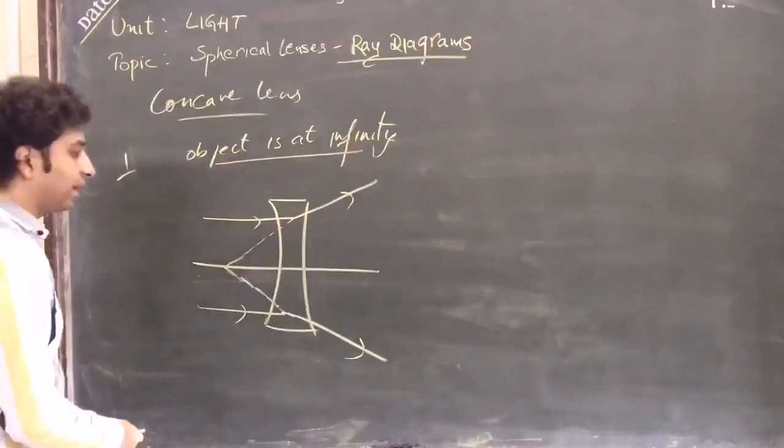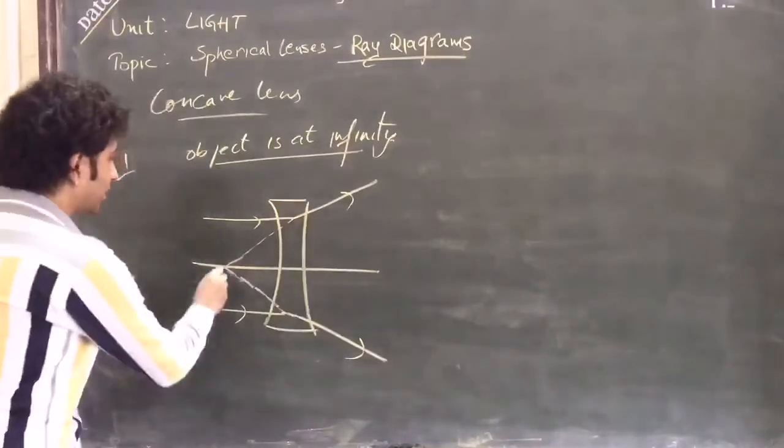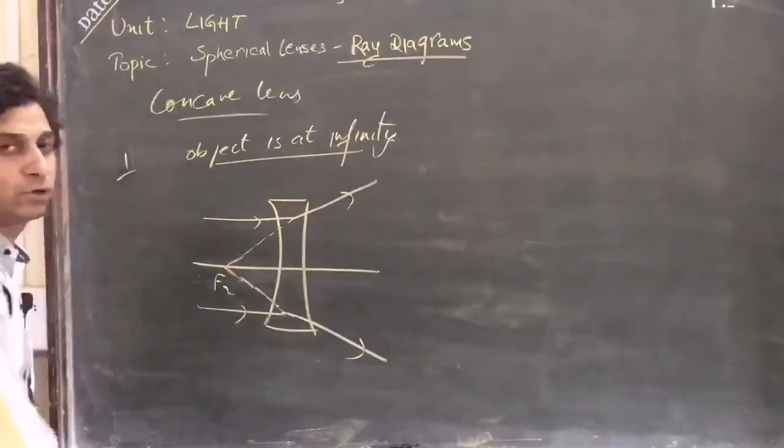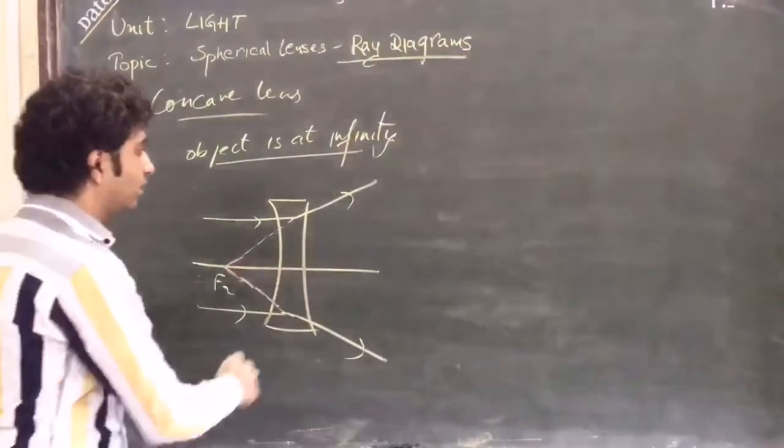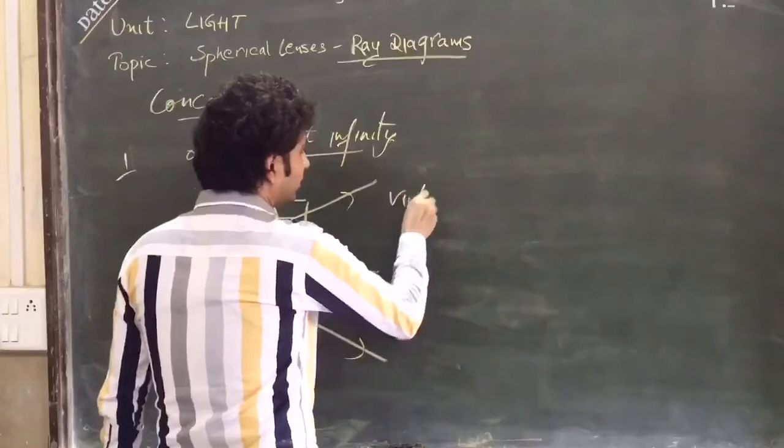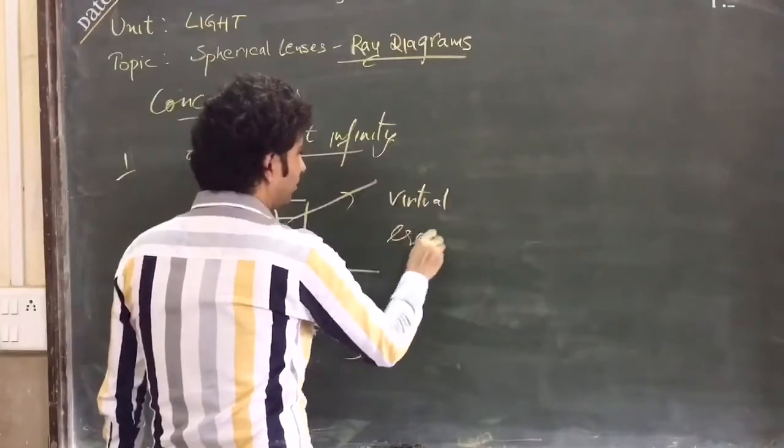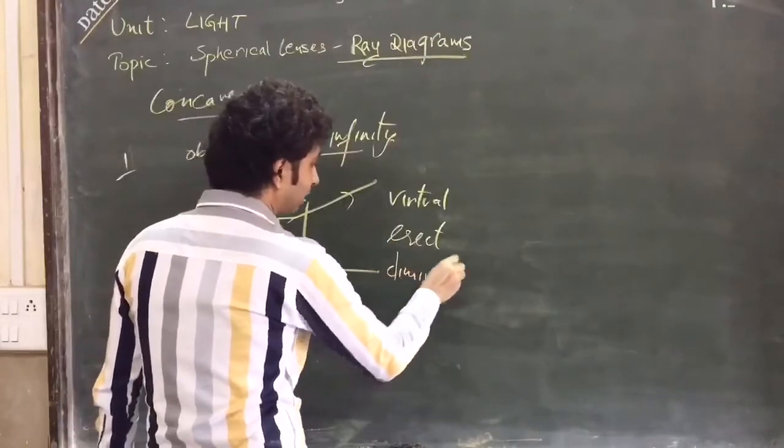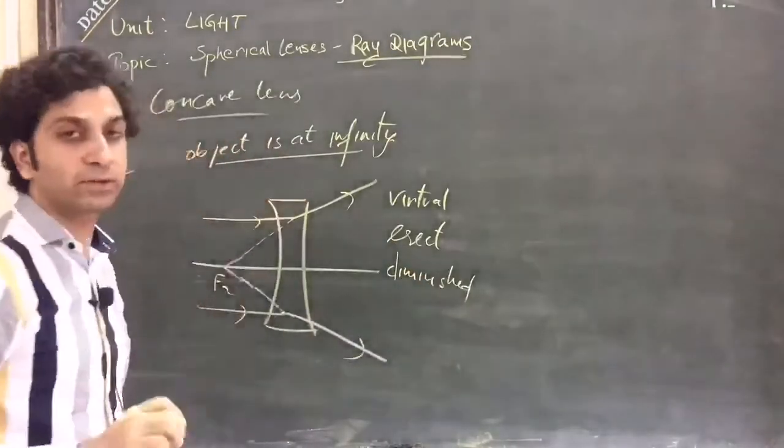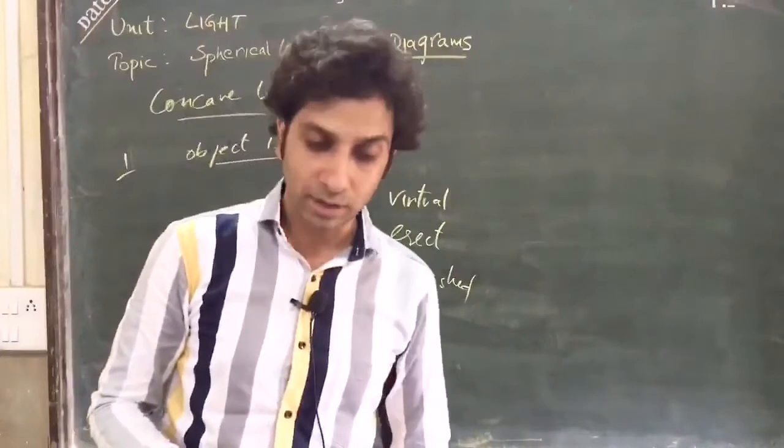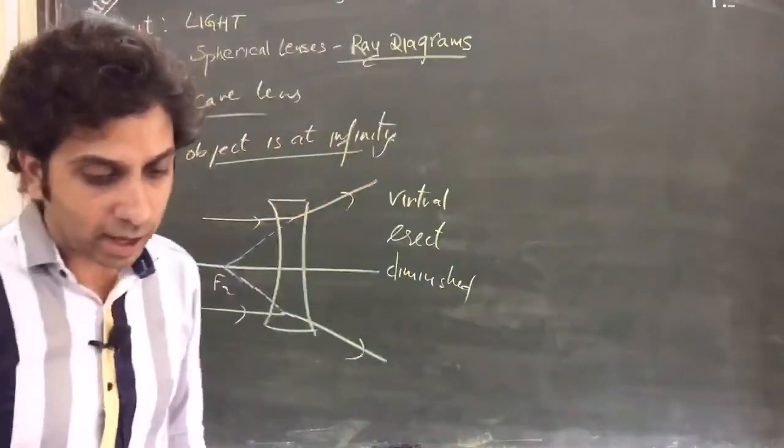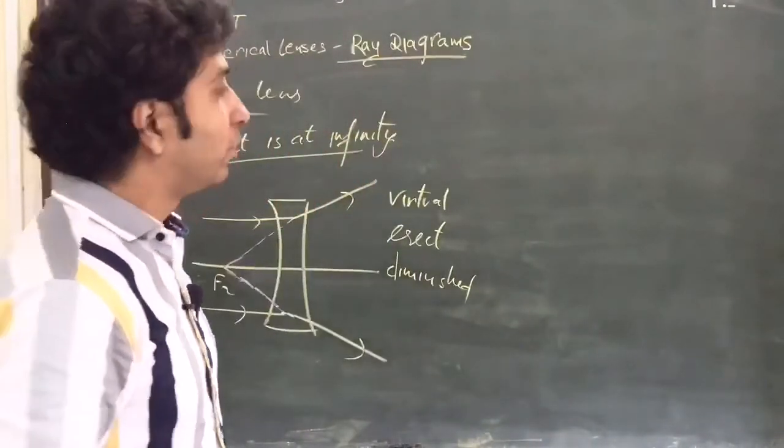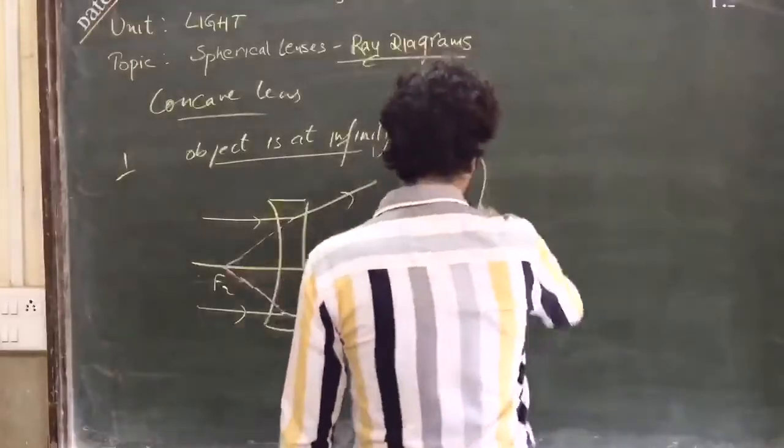The image formed will be at the principal focus, that is F2. So we can say that the image formed is virtual, the image formed is erect, and the image formed is highly diminished, formed on the same side as the object.